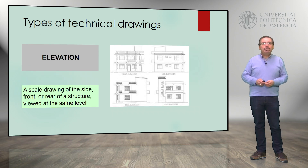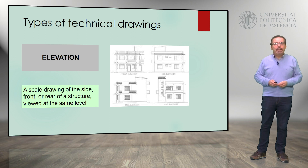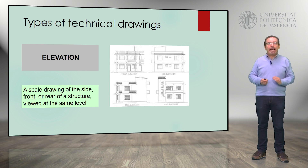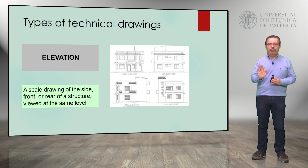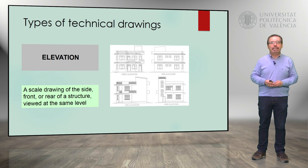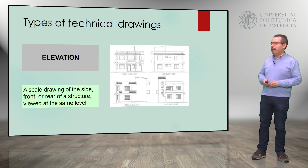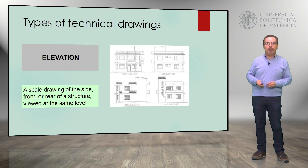An elevation is another important type of drawing. In this case, we have a scale drawing of the side, front, or rear of a structure — a structure viewed at the same level, for example of a building, as we have here in the example.